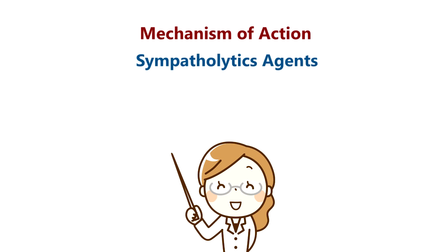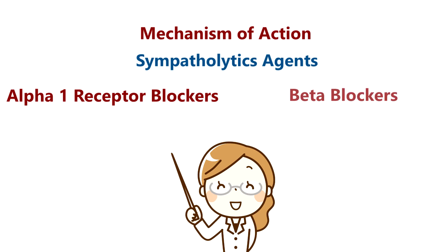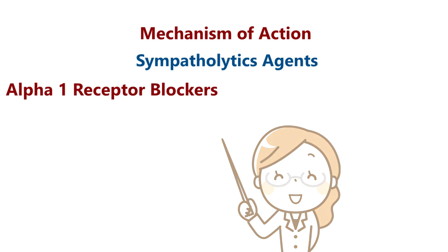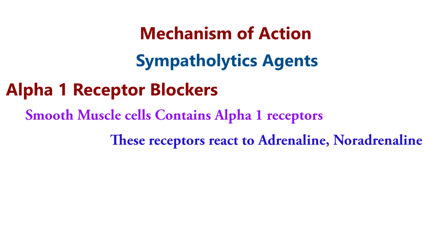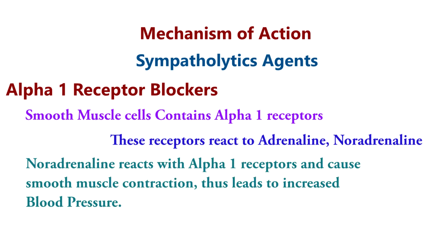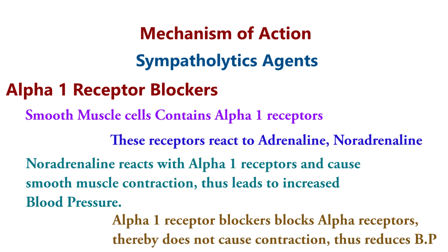Mechanism of action of sympatholytic agents — Alpha 1 receptor blockers: Smooth muscle cells contain alpha 1 receptors. Noradrenaline reacts with alpha 1 receptors and causes smooth muscle contraction, which increases blood pressure. Alpha 1 receptor blockers block these receptors, thereby preventing contraction and reducing blood pressure.